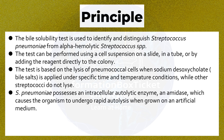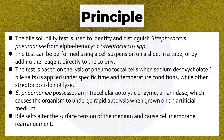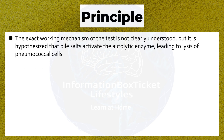Streptococcus pneumoniae possesses an intracellular autolytic enzyme — an amidase — which causes the organism to undergo rapid autolysis when grown on an artificial medium. Bile salts alter the surface tension of the medium and cause cell membrane rearrangement. It is hypothesized that bile salts activate the autolytic enzyme, leading to lysis of pneumococcal cells.